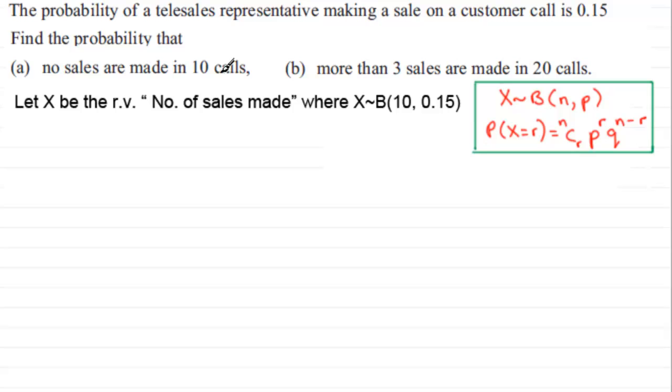n we know is 10, and the probability of success, making a sale, is 0.15. So that would mean that therefore the probability of making no sales, that's X equaling 0, is going to be equal to, by the formula here...